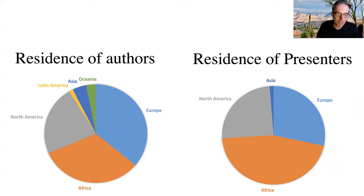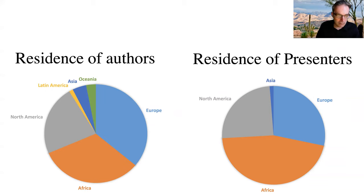In the second pie chart, we see that the share of presenters at this conference is largely having their residence in Africa. Many of the scholars in North America and Europe are African students or faculty. As such, our conference has a better representation of the African continent. It also helps that we allow presentations in both English and French.